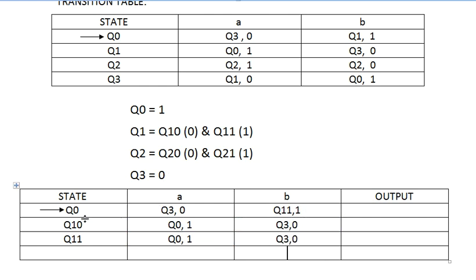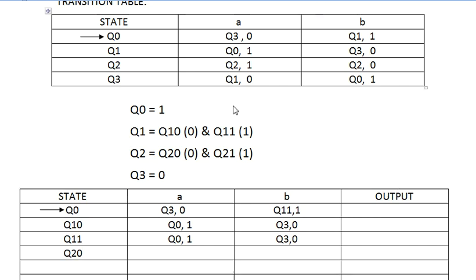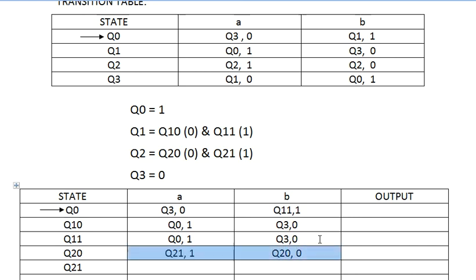After Q1_0 and Q1_1, we analyze Q2_0 and Q2_1. Q2 on seeing A goes to Q2 with output 1, so the resulting state is Q2_1. Q2 on seeing B goes to Q2 with output 0, so the resulting state is Q2_0. Since both Q2_0 and Q2_1 have the same input transitions, Q2_1 will also have the same transitions as Q2_0.